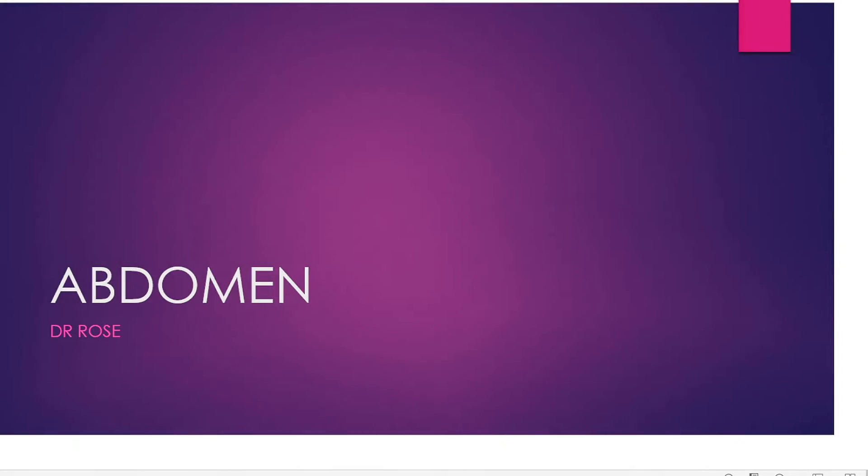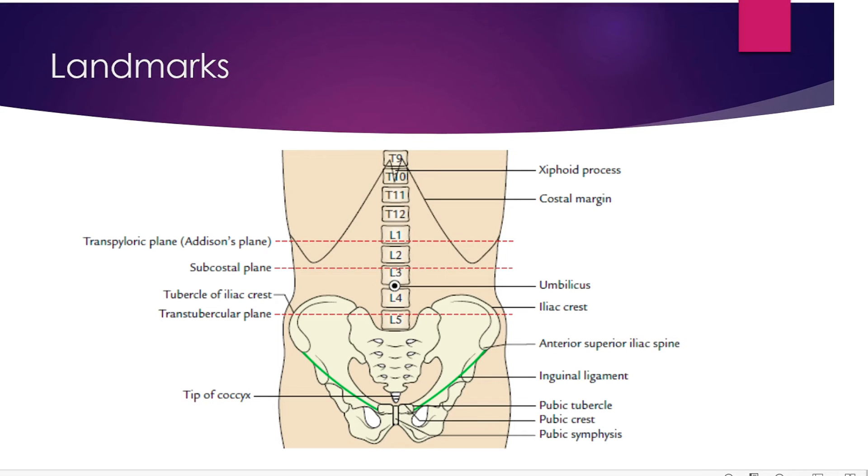We will be starting with the anterior abdominal wall. When we talk about the anterior abdominal wall, we have to know the important landmarks. When a patient comes to you with a history of pain abdomen, you cannot simply say that the patient is having pain in the lower or upper part. In order to assess properly, you need to know the important landmarks of the anterior abdominal wall and also the underlying structures, so that you can diagnose a condition in a patient.